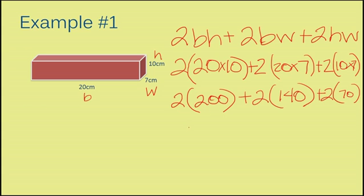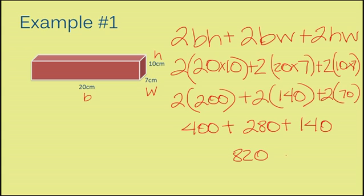Now I'm going to multiply my 2 by the number on the inside of the parentheses. 2 times 200 is 400. 2 times 140 is 280. And 2 times 70 is 140. Now I'm going to add all these numbers and I get 820. My units here are centimeters and my answer is squared because we are finding the surface area.